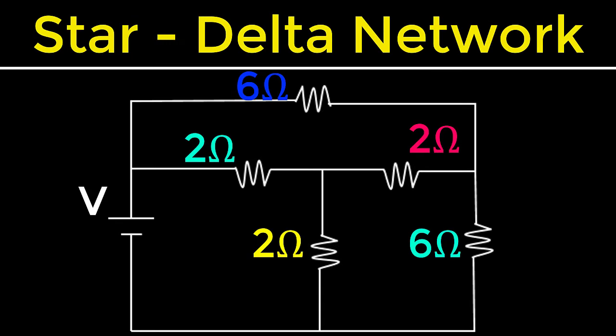Hello everyone, this is Khan City Academy. In the previous lecture, we learnt how to find the equivalent resistance of a short circuit. In today's video, we are going to focus more on delta star transformation.